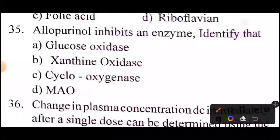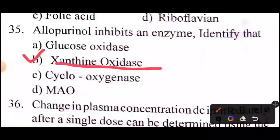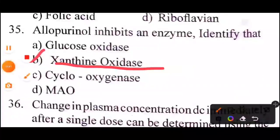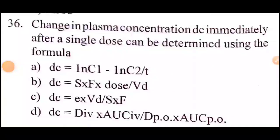Question 35: allopurinol inhibits which enzyme — identify it. Answer: option B, xanthine oxidase.